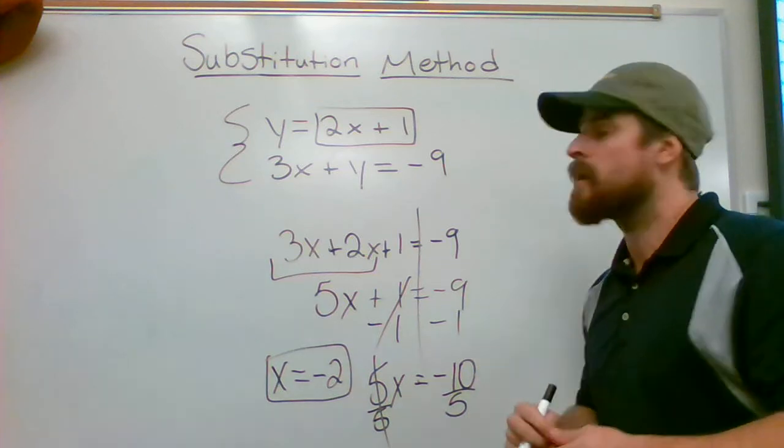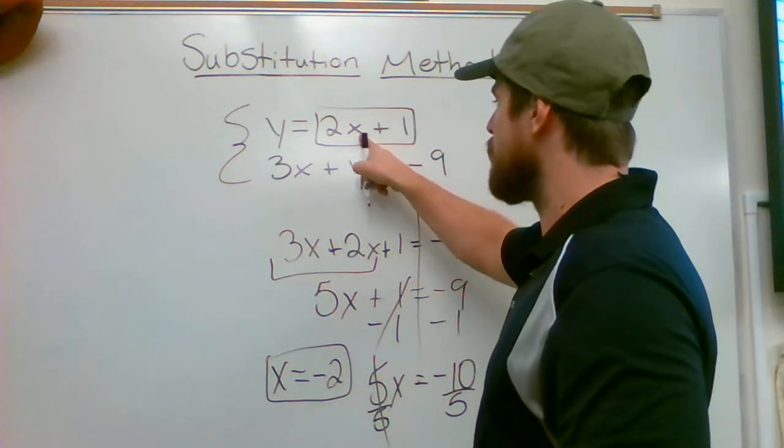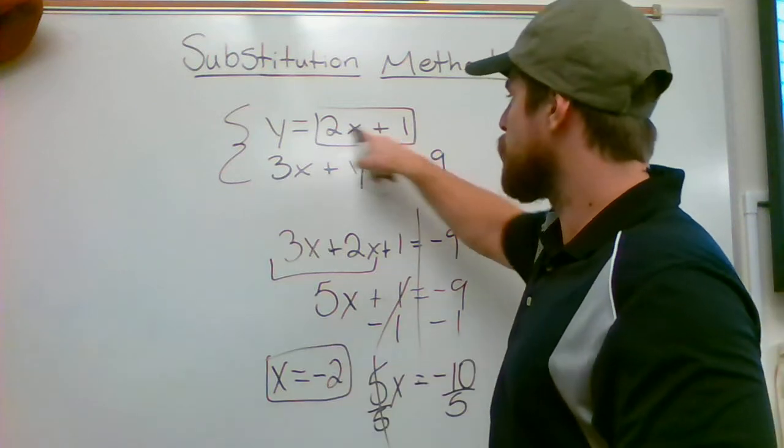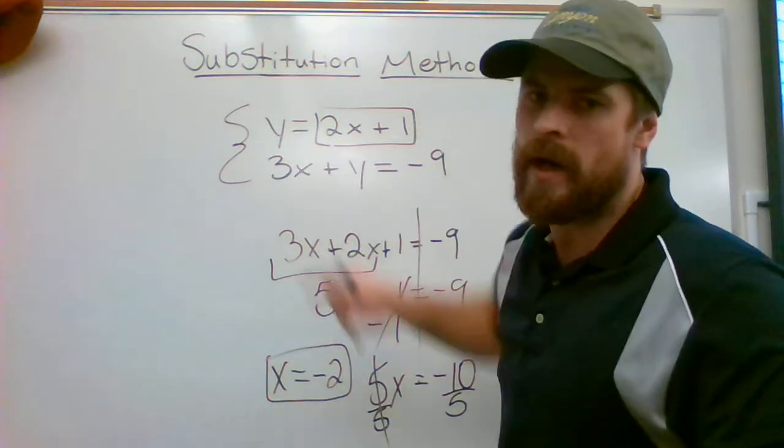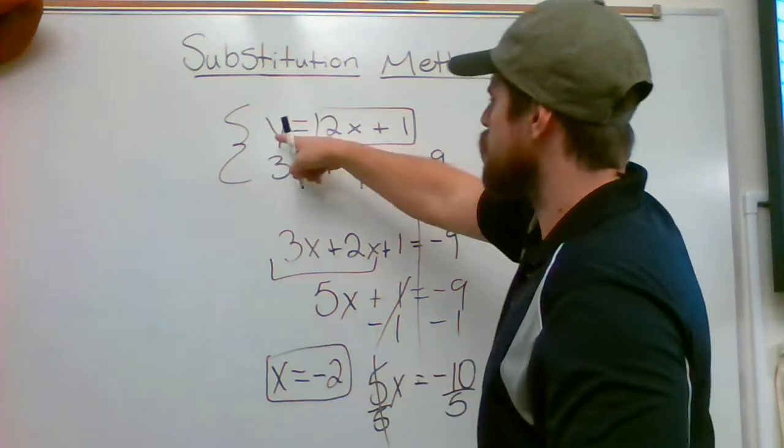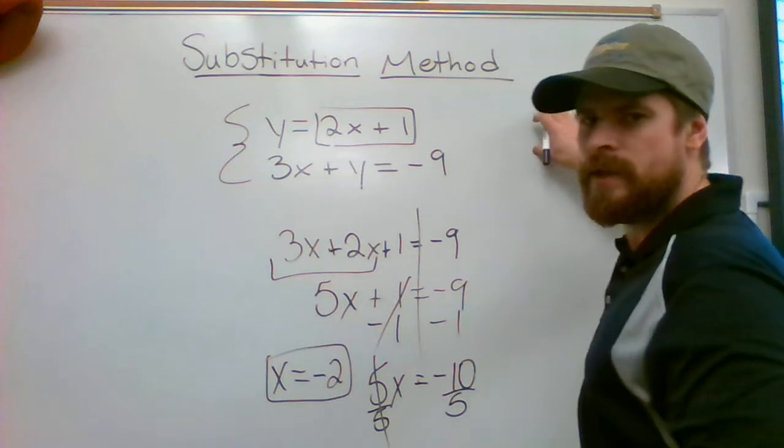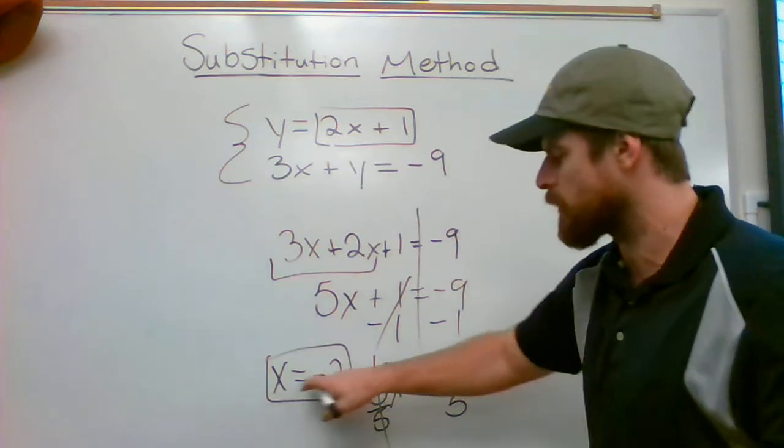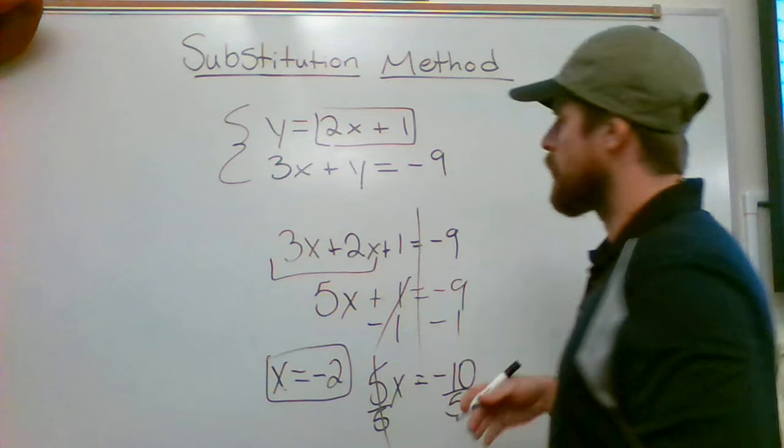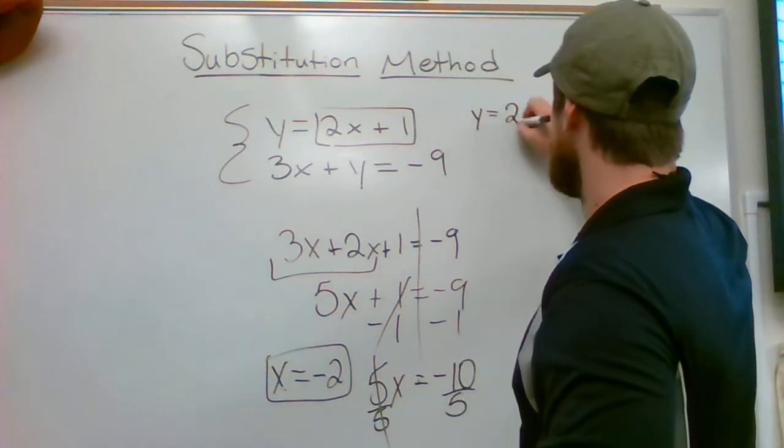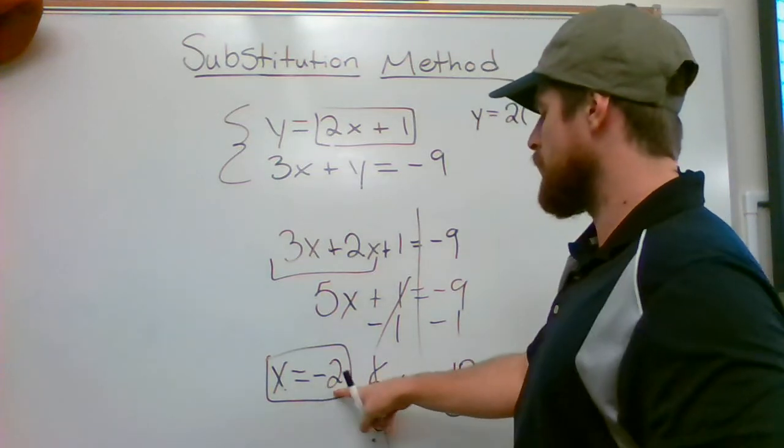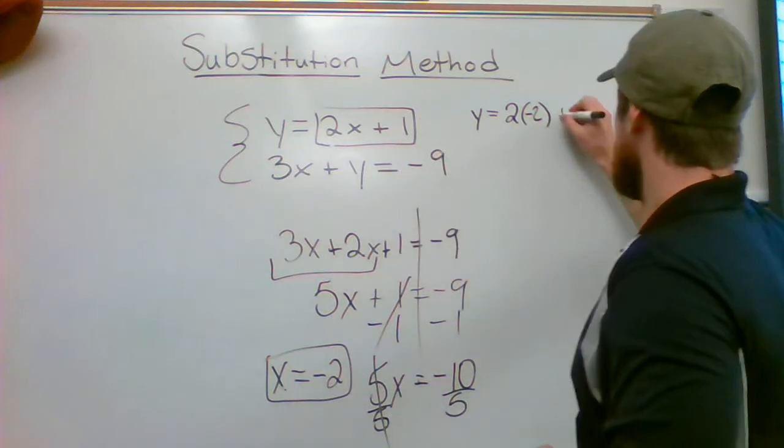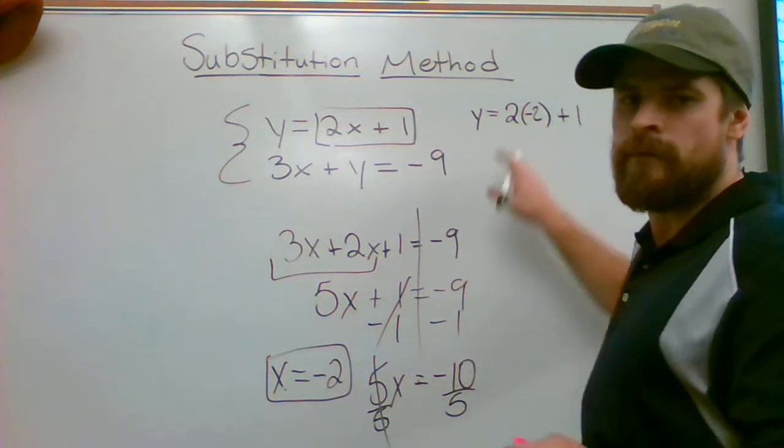It's just sometimes one is easier than the other, and I know that plugging a negative 2 right there for x is going to be a pretty quick calculation to solve for y. So that's exactly what I'm going to do. I'm going to rewrite this equation off to the side over here. I'm going to plug in negative 2 where the x goes, because we know that's what it's equal to, and I'm going to solve for y. y equals 2 parentheses. Negative 2 goes in the parentheses, plus 1, and now I can solve for y.